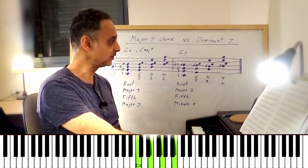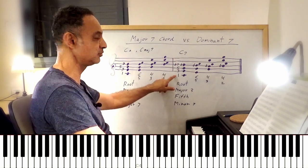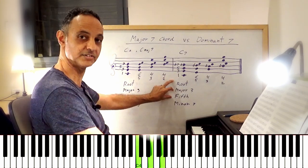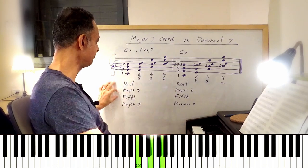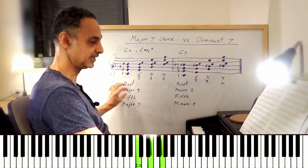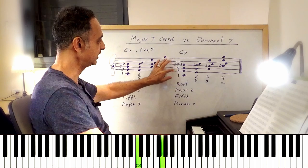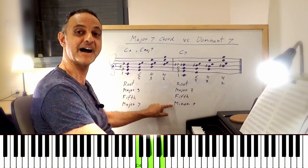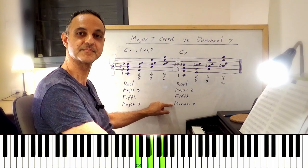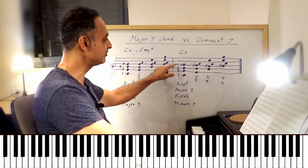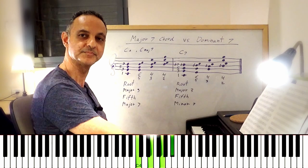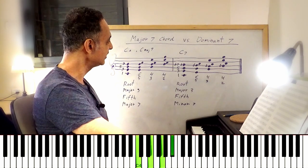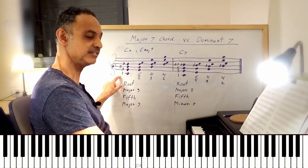Now take a look at C7. We have the root C, a major 3rd above the root, and a perfect 5th above the root — the same major triad: C, E, G. But the 7th is minor, which makes it B flat on top. So this is a C7, and this is a C major 7.